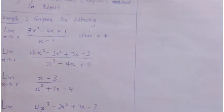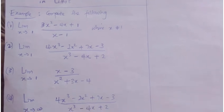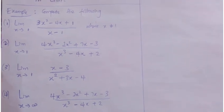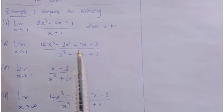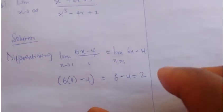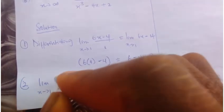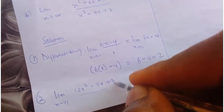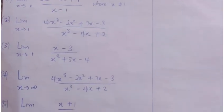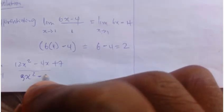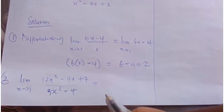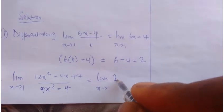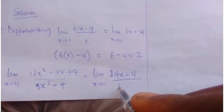For question number two, we need to find the limit as x tends to 1 of that fraction. Differentiating completely, the numerator becomes 12x² - 4x + 7, and the denominator becomes 3x² - 4. So we have: limit as x tends to 1 of (12x² - 4x + 7) over (3x² - 4). We can see we need to differentiate again, giving us the limit as x tends to 1 of (24x - 4) over 6x.